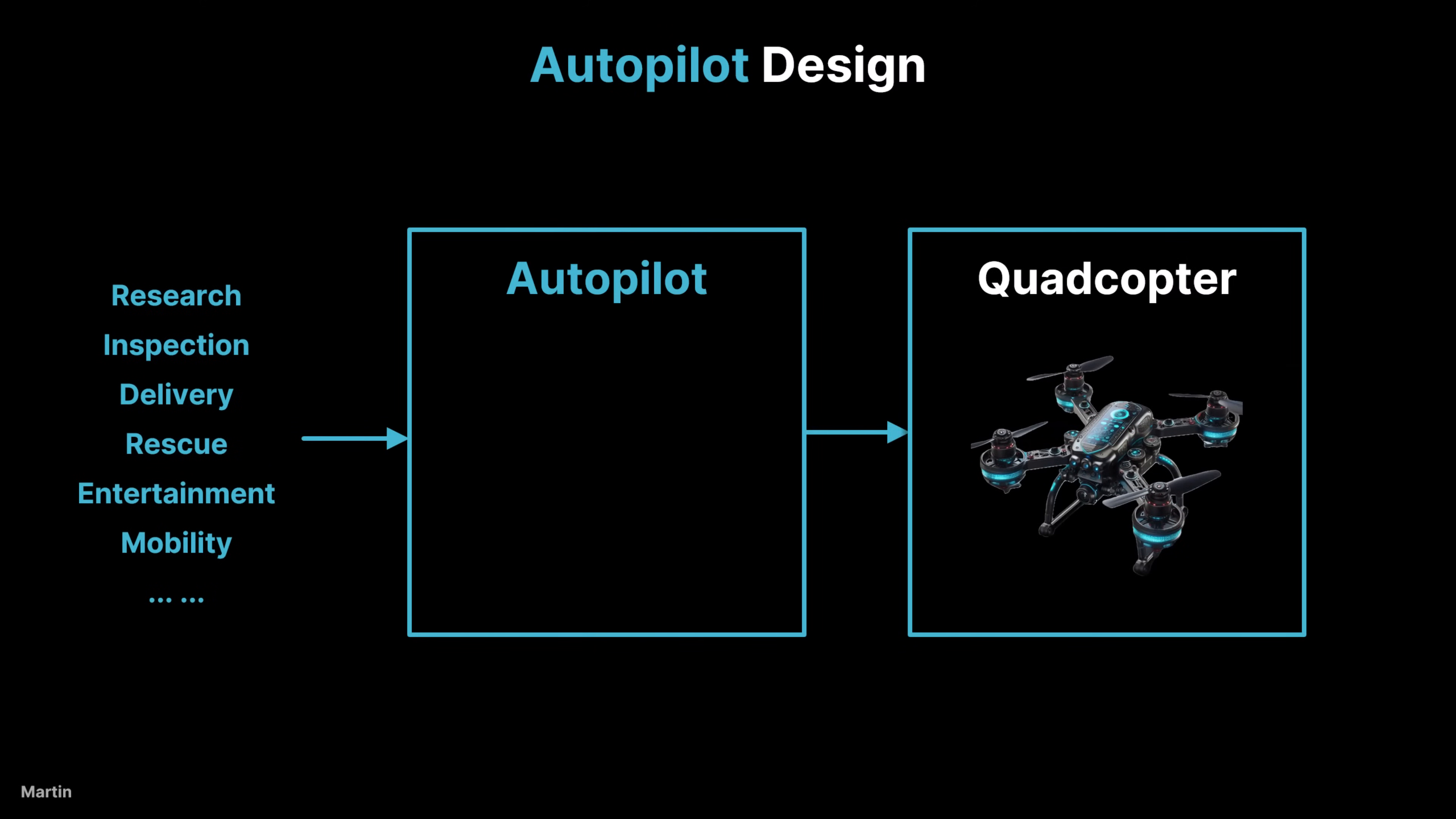The autopilot of a quadcopter plays a crucial role in enabling these applications by providing essential functions for autonomous operation. It stabilizes the vehicle against turbulence and external disturbances, ensuring smooth and controlled flight. It also enables precise navigation, allowing the quadcopter to travel from point A to point B while following a predefined path.